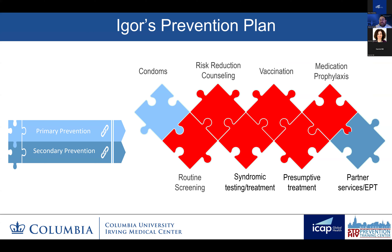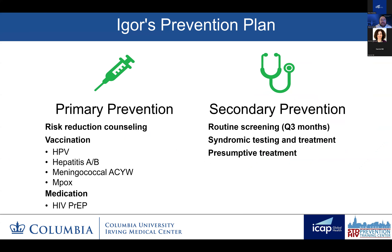This is Igor's STI prevention plan, and this is true for many patients—it includes elements of both primary and secondary prevention. For primary prevention, he receives risk-reduction counseling from our sexual health navigators at his regular visits. For vaccination, he's been vaccinated against HPV, hepatitis A and B, meningococcal disease with the MenACYW vaccine, and MPOX. He also takes daily HIV PrEP to prevent HIV. For secondary prevention, he engages in routine screening every three months. He knows to come in for syndromic testing and treatment if he has symptoms, and he knows if he's exposed to call our navigators. However, in the past he's not been willing to refer his partners for treatment or provide expedited partner therapy, although it is offered to him.